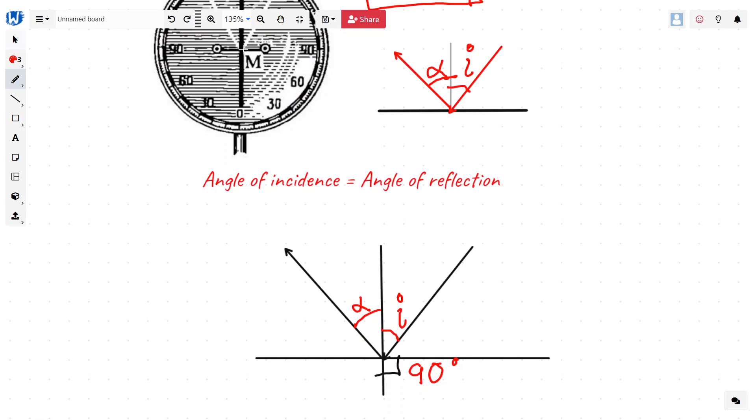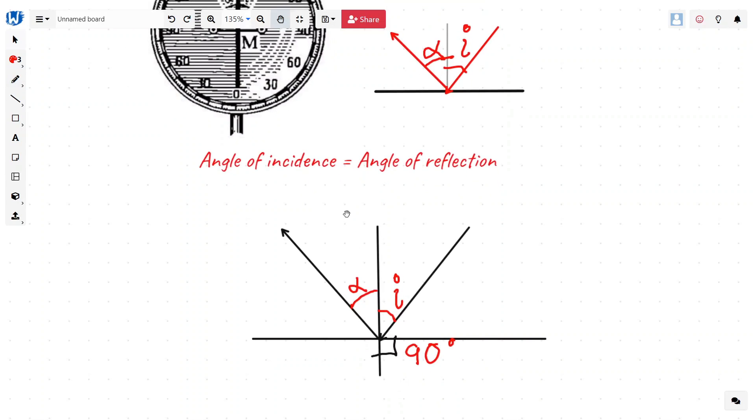So, there is a second part of the law which says that the incident ray, which is here, and then the reflected ray and the normal always lie in the same plane, which means that they do not sort of bend inward or outward.